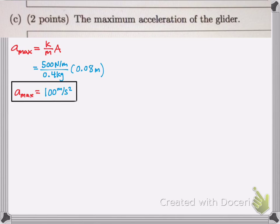Okay, now we want to find the maximum acceleration of the glider. The maximum acceleration of the glider can be found by using a max equals k over m times A. You can solve for that pretty easy. Plug in what you know, and you can get a max.